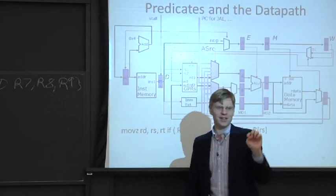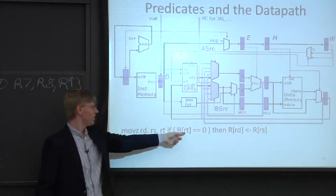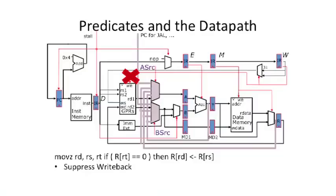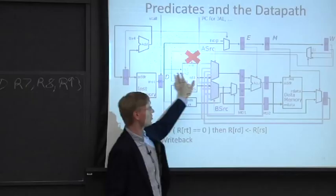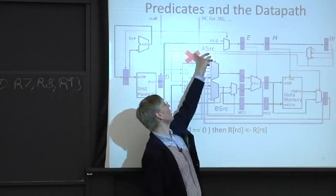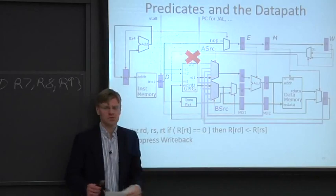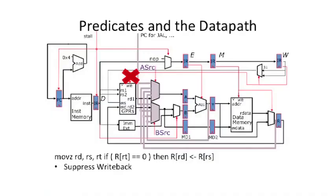This is interesting. This is a really cool trick. If this condition is not true, let's just kill the writeback to the register file. It's brilliant. We just suppress the writeback. We don't have to actually change our datapath at all. We just put an AND gate in here, and this AND gate depends on this condition. Simple, it's easy. We just add an AND gate where the big X is, and life is done.